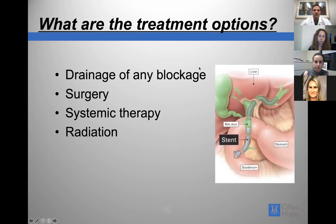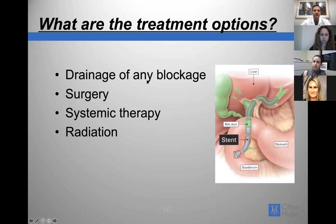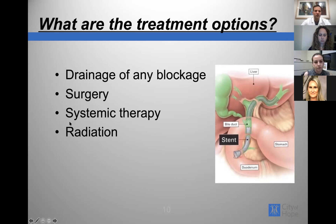What are the treatment options? The most common presentation is blockage of the bile duct and jaundice, so first you must ensure the liver is working and draining. The blockage is usually addressed either from inside the intestines via a scope — done by a gastroenterologist — or by a tube from outside the liver into the bile duct. The other treatment options are surgery, systemic therapy, and radiation.